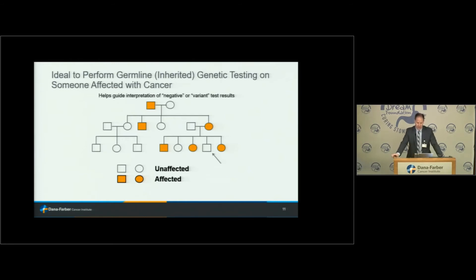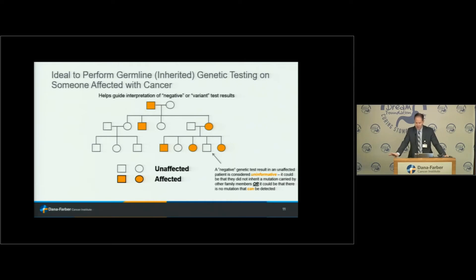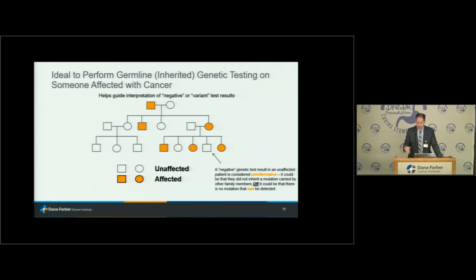In a perfect world, we prefer to perform germline genetic testing on an individual who's actually been affected with the cancer of concern. This is a family tree — what we call a pedigree — squares are males, circles are females, each line is a given generation. If an unaffected person shows up for genetic testing with a strong family history but gets negative results, that's what we call an uninformative negative. It may be that we tested the wrong person in the family when inherited risk truly exists, or modern testing simply can't identify what that risk is. Sometimes the only person available or willing to be tested is the unaffected person — the results are not always black and white.